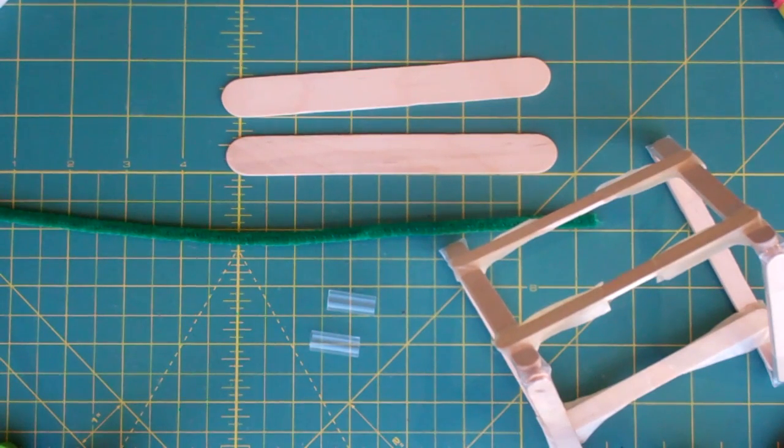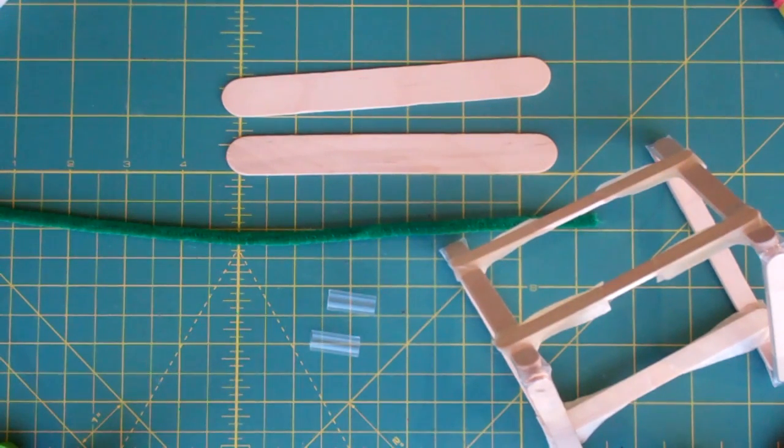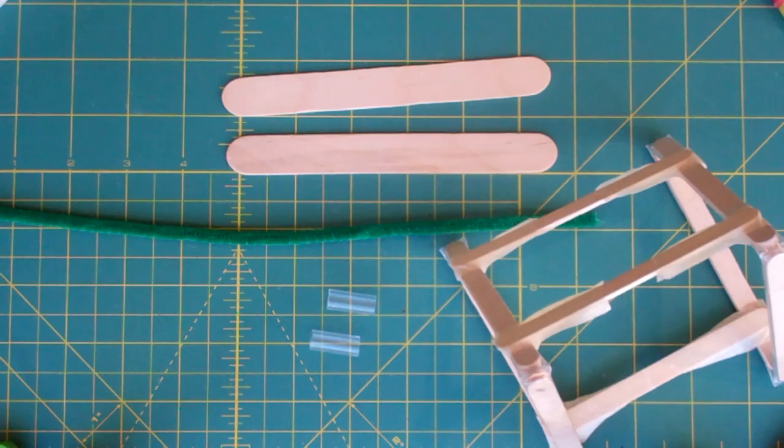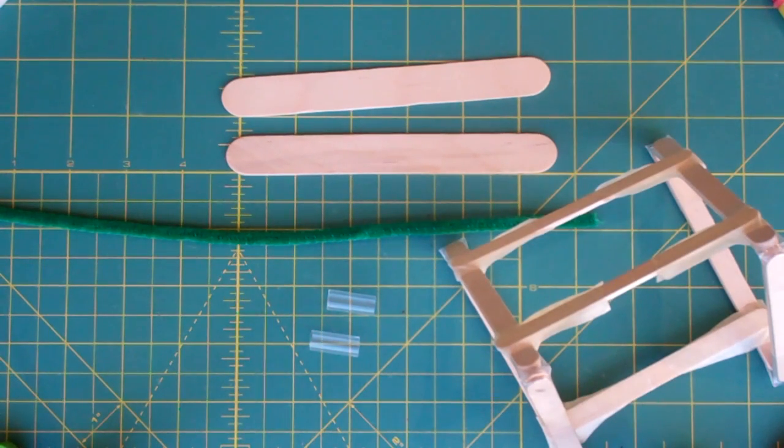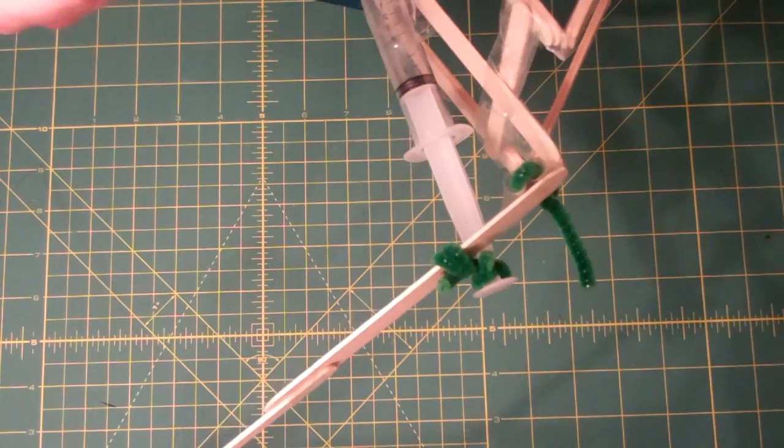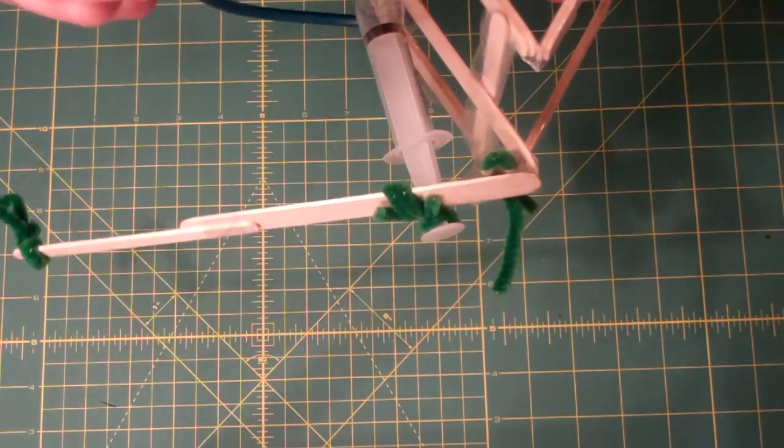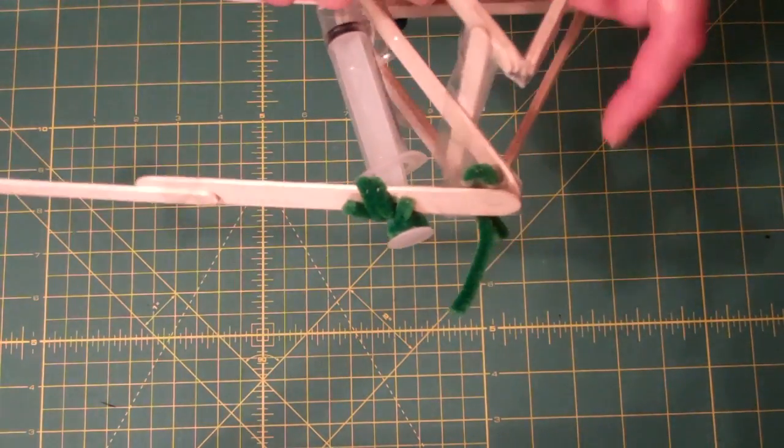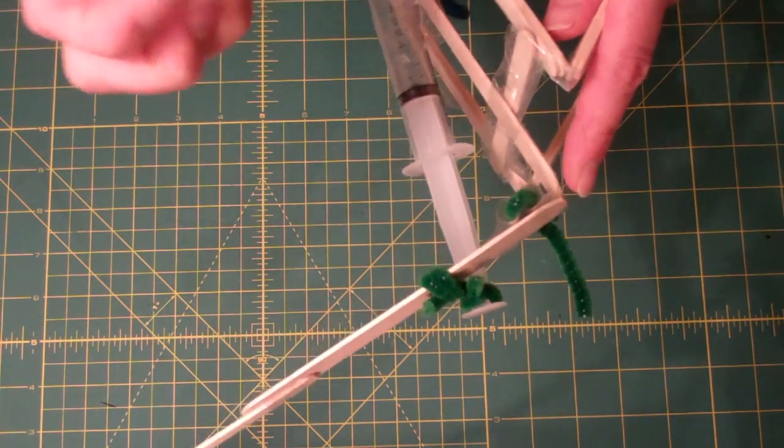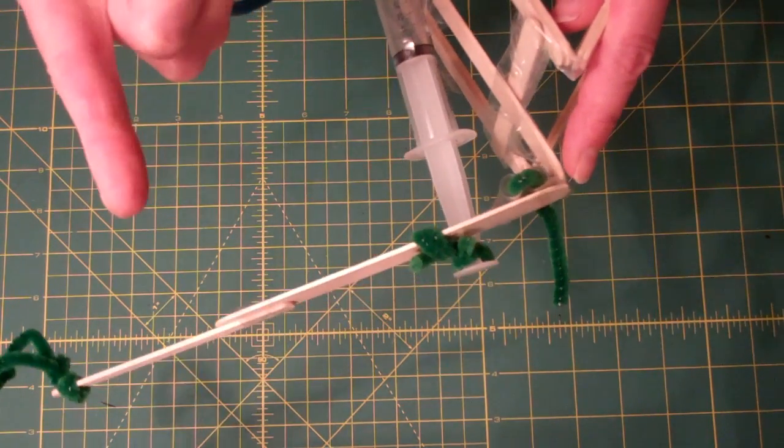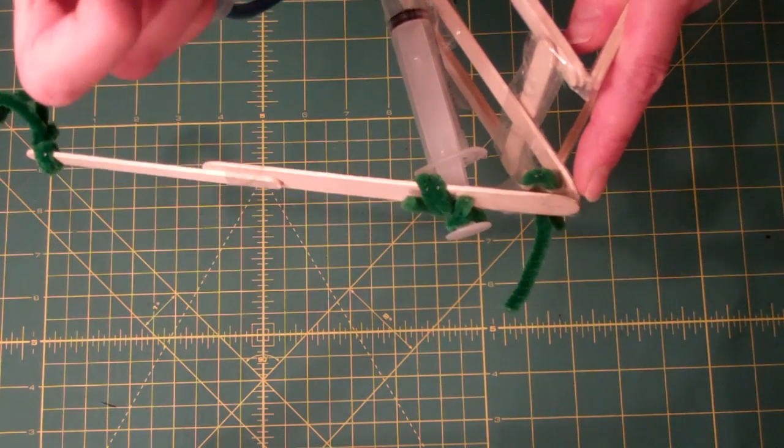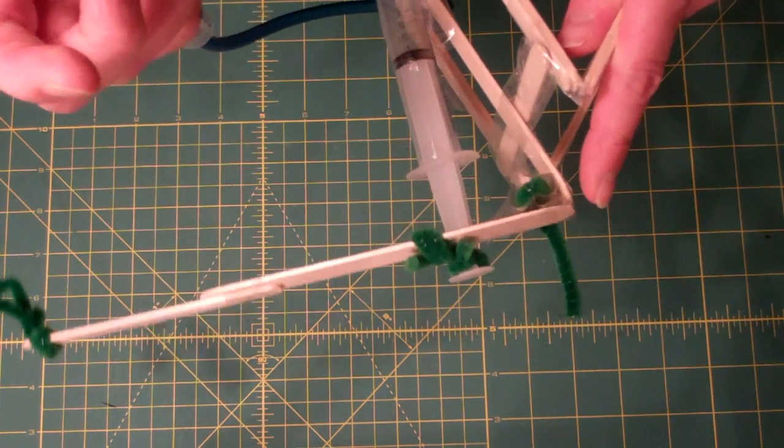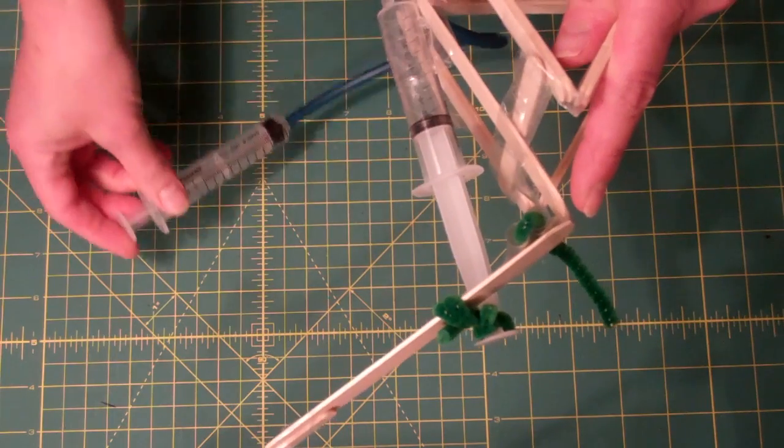Okay, step three then is to create the hinge at the top of the machine. If I just show you on the demo, you can see how this hinges. Let's see if I can make it work with one hand. There's a hinge here at this point, this mechanism here, so that we can make the arm move. So our next step is to create that hinge.